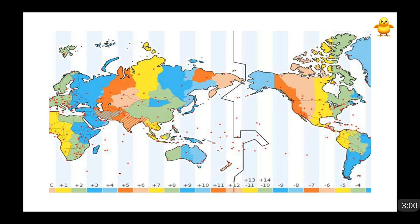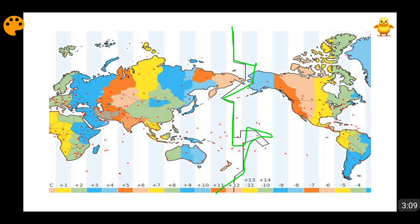It is very important for the international dateline to not pass through land, and this is the reason that the international dateline has changed its orientation at so many places. It is changing its shape again and again. The reason why this international dateline keeps changing its shape is that it is very important for it to not pass through any country's landmass.